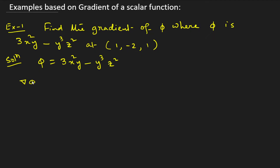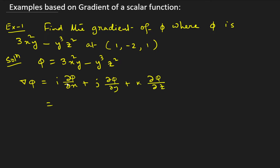So gradient of φ means ∇φ. Nabla φ is defined as i-cap (∂φ/∂x) + j-cap (∂φ/∂y) + k-cap (∂φ/∂z). These are all partial differentials. So if we differentiate φ with respect to x, recall that φ = 3x²y − y³z².